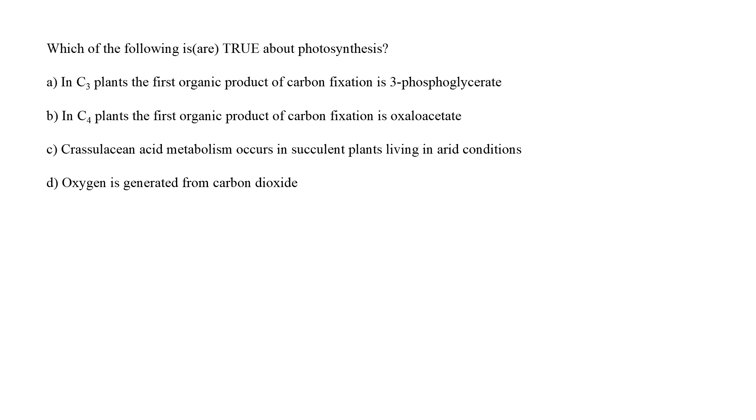While in case of the C4 cycle, the first product is a 4-carbon compound, i.e. oxaloacetate. The option A and option B are therefore correct. The CAM cycle is used by the succulent plants as an adaptation to the arid conditions. In such plants, the stomata remains closed during the day to reduce the loss of water through transpiration. Therefore, this option also stands correct. Option D, however, is wrong since oxygen in photosynthesis is generated from water and not from carbon dioxide.